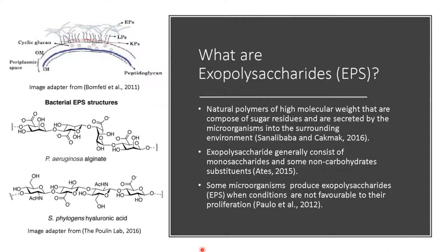So, what is Exopolysaccharide? It is a natural polymer of high molecular weight that is composed of sugar residues and secreted by microorganisms into the surrounding environment. Exopolysaccharide generally consists of monosaccharides and some non-carbohydrate substituents. Some microorganisms produce EPS when conditions are not favourable to their proliferation. As you can see, the EPS is located outside the cell, and this is some structure of EPS.